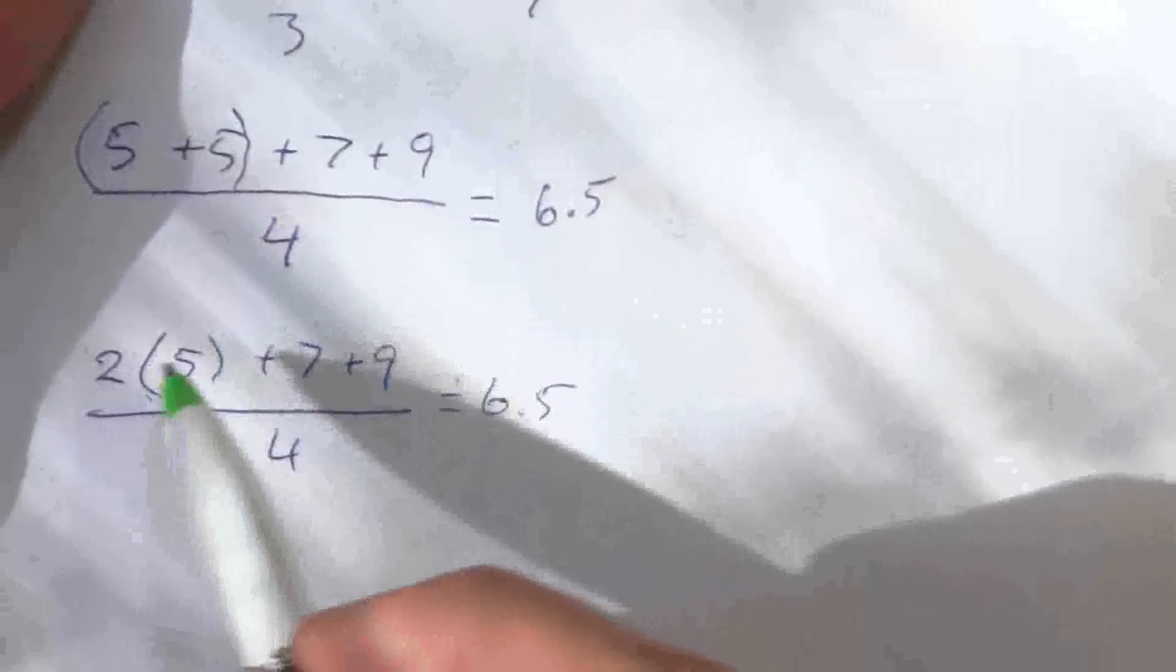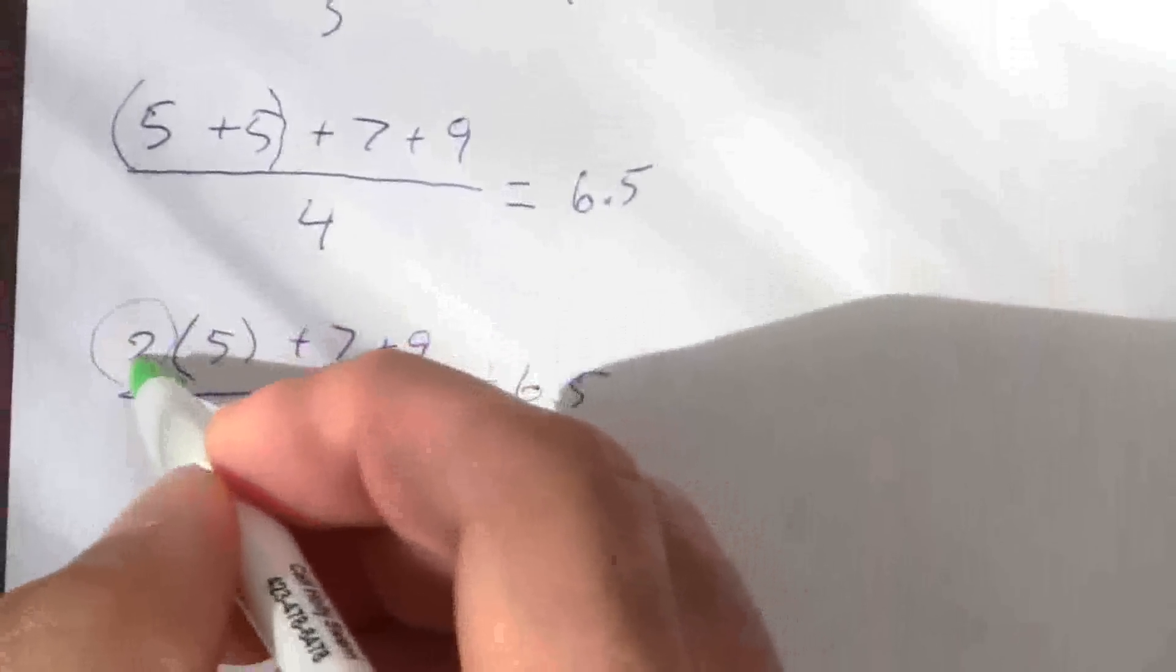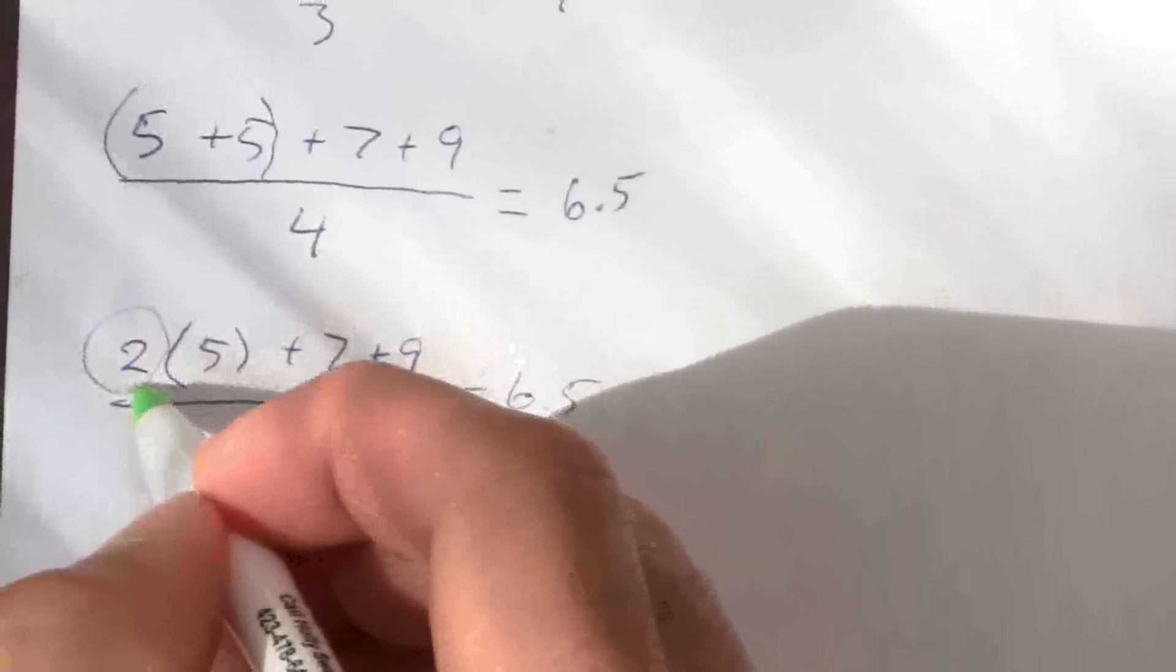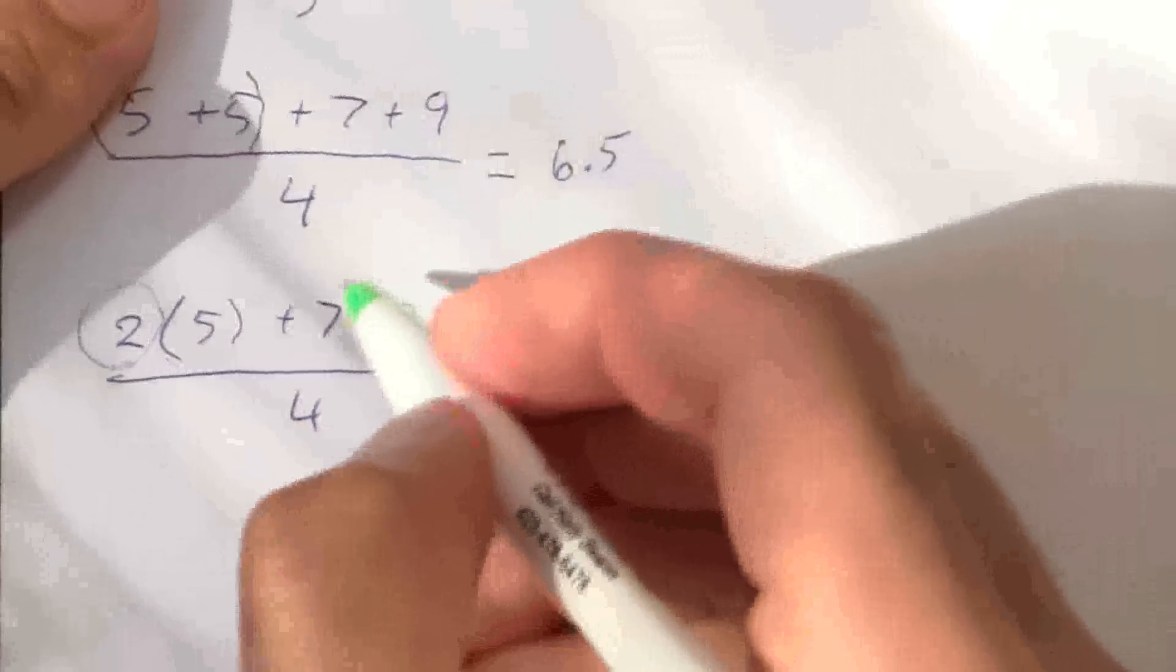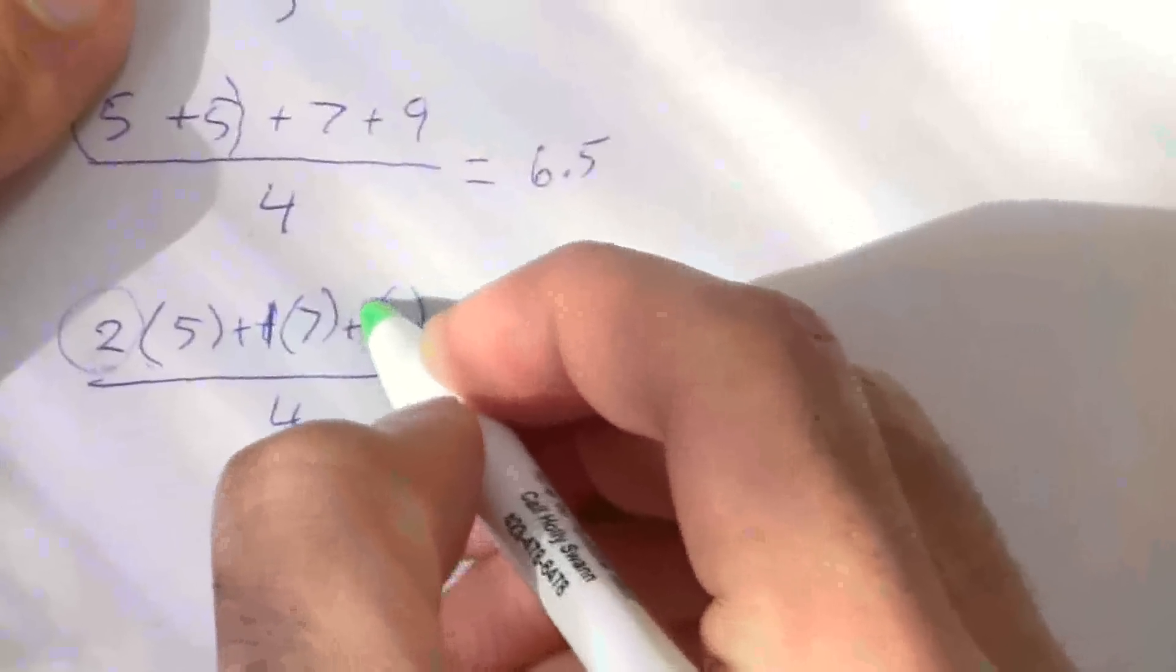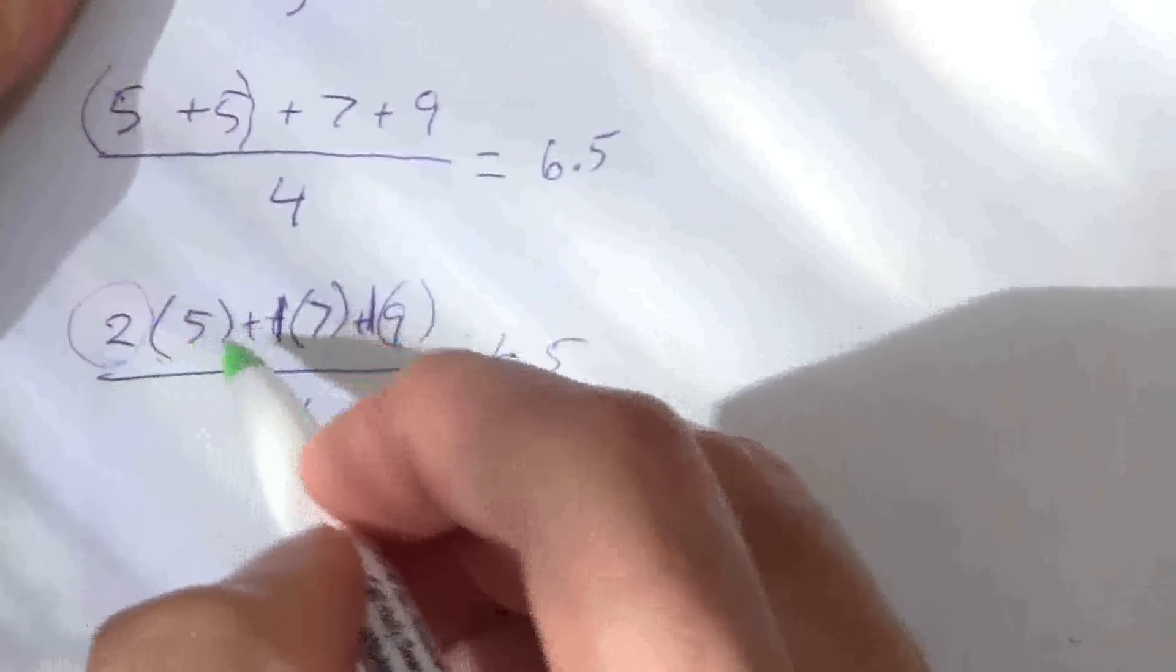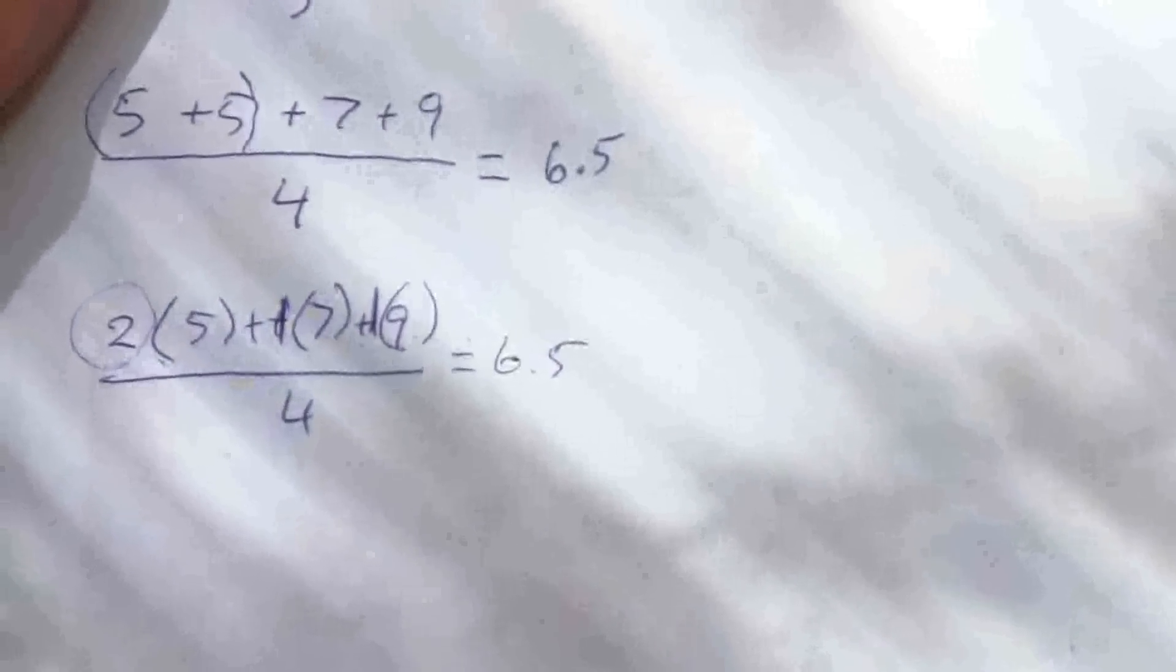So I'm doing the same thing I did here except this 2 is the weight that we would call the weight of the 5. The 5 has a heavier weight than the 7 and the 9. The weight for the 7 and the 9 is just 1. Because I have twice the weight of the 5 as I have of the 7 and the 9.